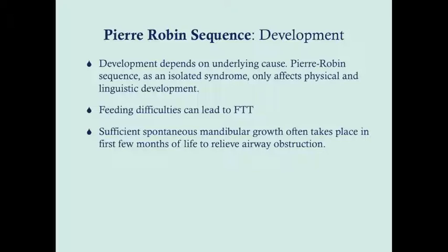Development depends on the underlying cause. When Pierre Robin sequence is an isolated syndrome, it only affects physical and linguistic development. You'll manage it surgically, closing the cleft palate at about one to two years of age. Feeding difficulties can lead to failure to thrive. Spontaneous mandibular growth usually takes place within the first few months of life, helping relieve airway obstruction, though the mandible needs to grow further before children can take oral feeds similar to peers. Often these babies can feed by bottle with special nipples.